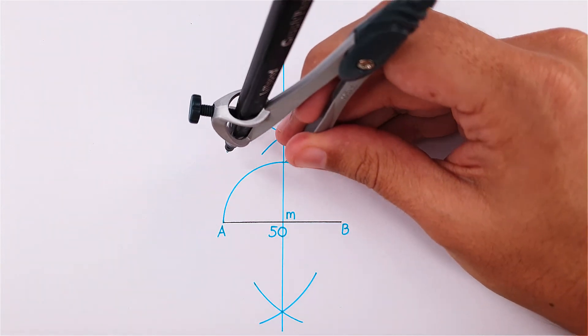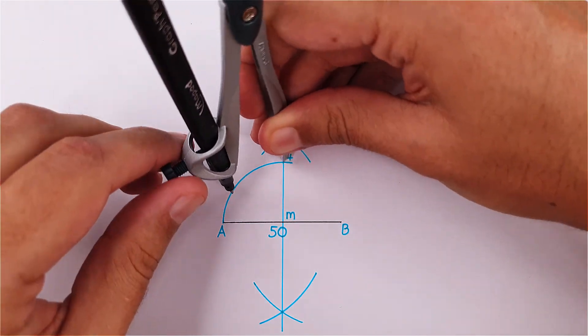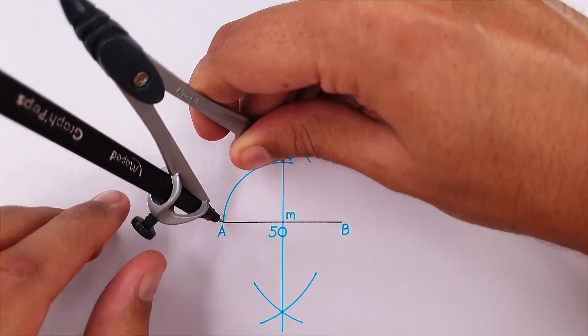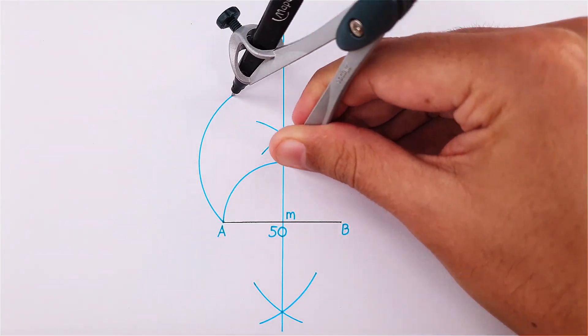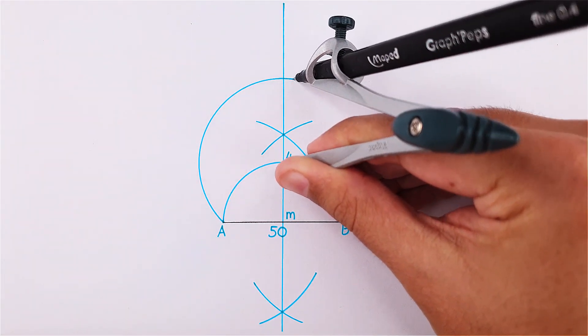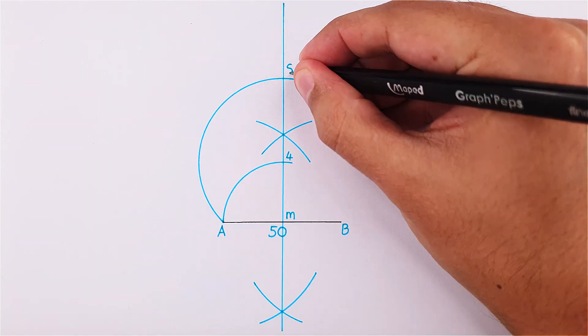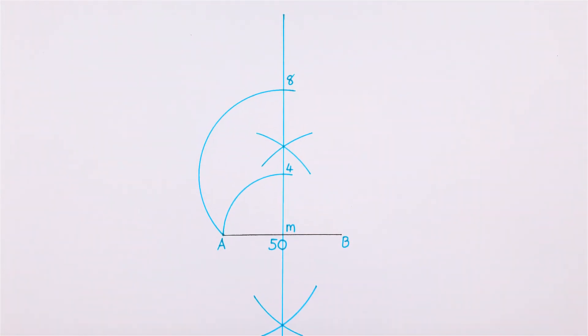Place your compass on point 4 and adjust it to point A. Project point A onto your perpendicular bisector again. Label this intersection as point 8.